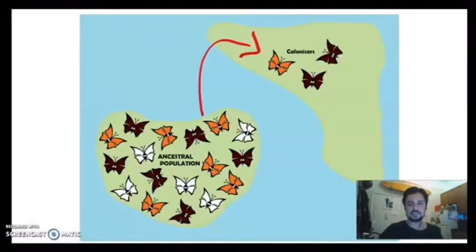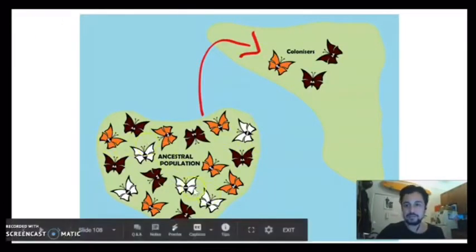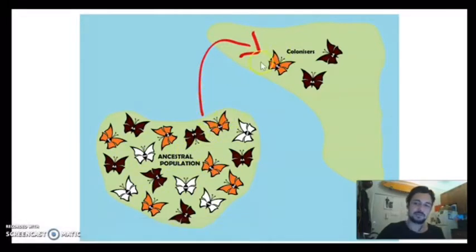So that's genetic drift. You also have founder effect. And in this example, you have a population of butterflies - white, brown, and orange. And it just so happens the ones that colonized this new island are only the orange and the brown ones. Well, those colonizing butterflies don't have any white butterflies. So the new population will all be brown and orange, and they will include none of these white butterflies. So that's the founder effect.